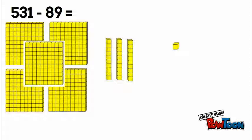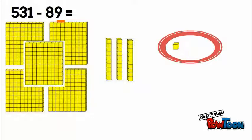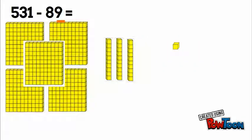531 minus 89. Again, we start by building 531, starting with our ones place. We see we have to take away nine, we only have one here, so we're gonna borrow one of our tens.